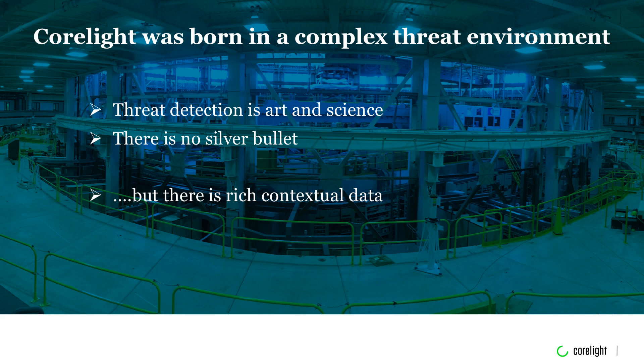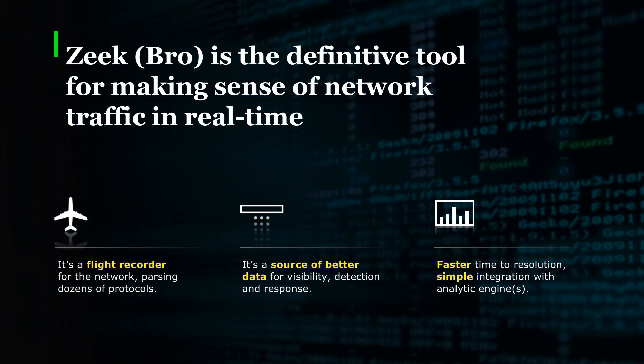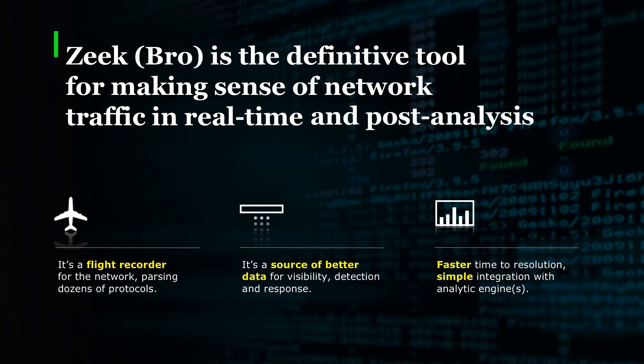Corelight was born in a complex threat environment and recognizes that threat detection is both art and science, and there is no silver bullet. But what there is, is rich contextual data. Corelight runs the Zeek Network Monitor, formerly known as Bro, and it's really become the definitive tool for making sense of network traffic in real time and for post-analysis. You can think of Zeek or Corelight as a flight recorder for the network, parsing dozens of protocols, providing you with a better source of data for visibility, detection, and response.